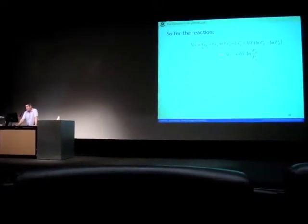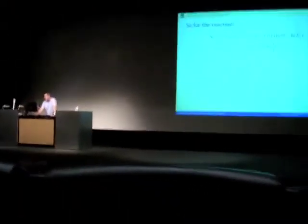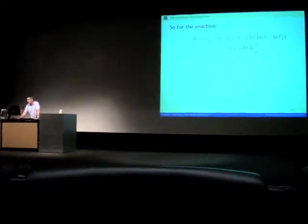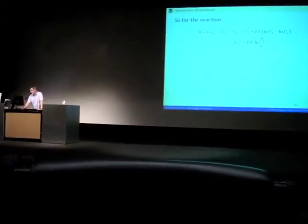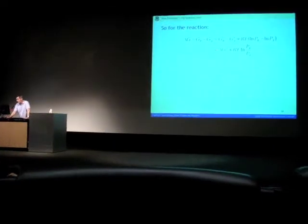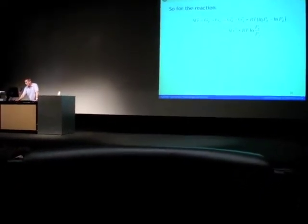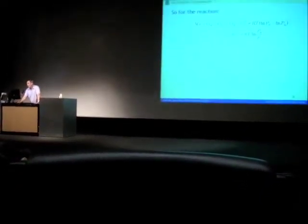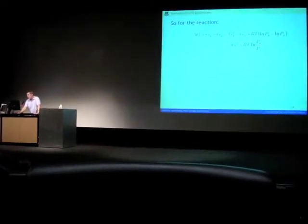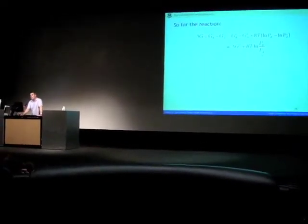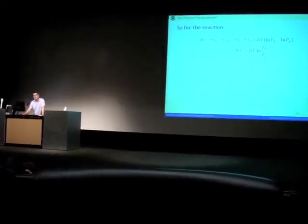And if you subtract those two right-hand sides, you get GB0 minus GA0 plus RT log PB minus PA. And there's this little trick with logs. When you subtract the logs, log of PB minus log of PA is exactly equal to log of PB divided by PA. If you're not sure, just do it. It works every time.